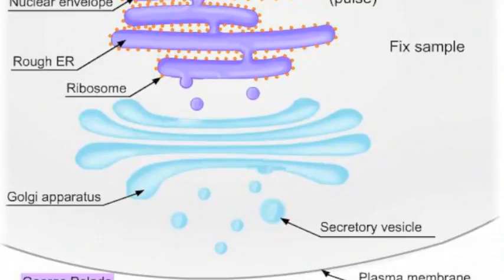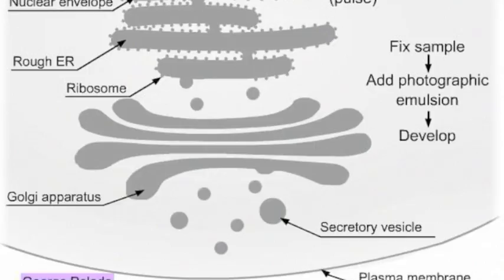The cells are prepared for microscopy and overlaid with a photographic emulsion, after which the samples are developed. The radioactive proteins produce black spots on the emulsion's gray background, revealing the locations of the proteins in the cell. If the researcher fixes the sample a few minutes after the pulse begins, radioactivity is observed only in the rough ER.